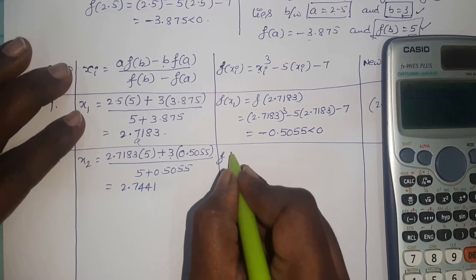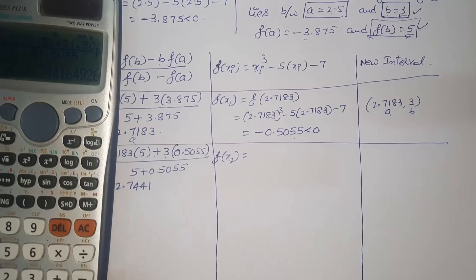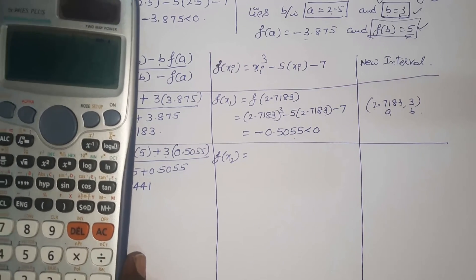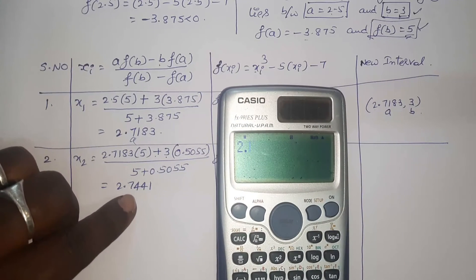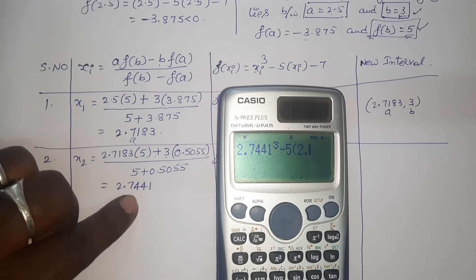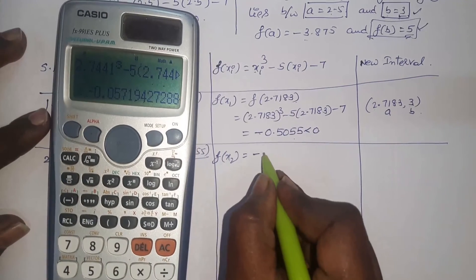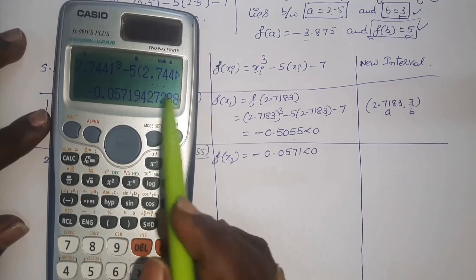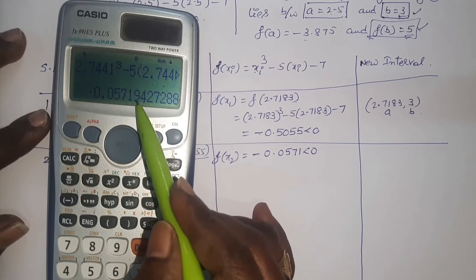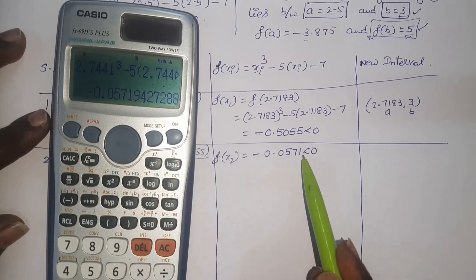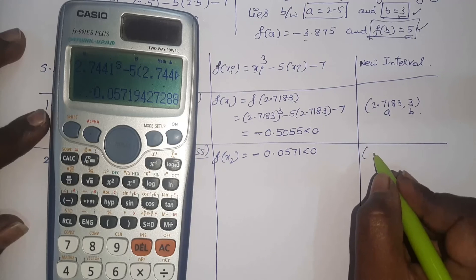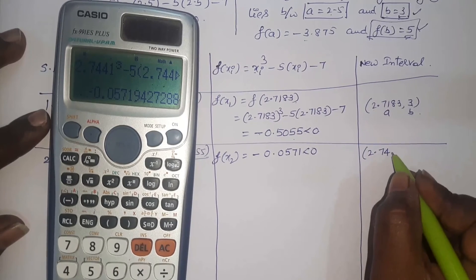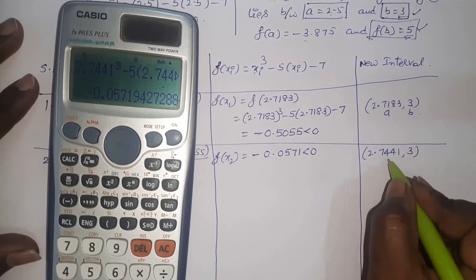Find f(x2) = f(2.7441): 2.7441³ - 5×2.7441 - 7. I get -0.0571, which is negative. You can also write -0.0572 since the 5th decimal place is 9. Since it is negative, the new interval becomes [2.7441, 3], with a = 2.7441 and b = 3.